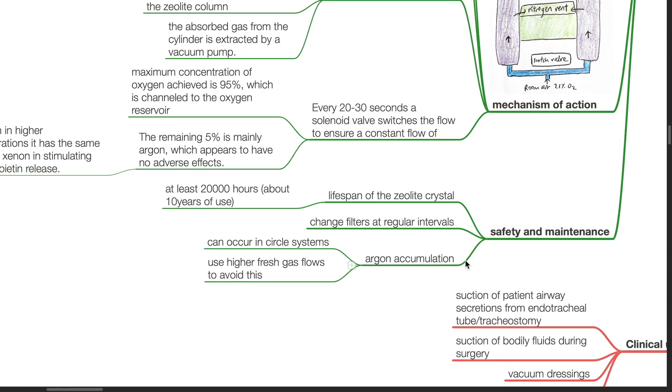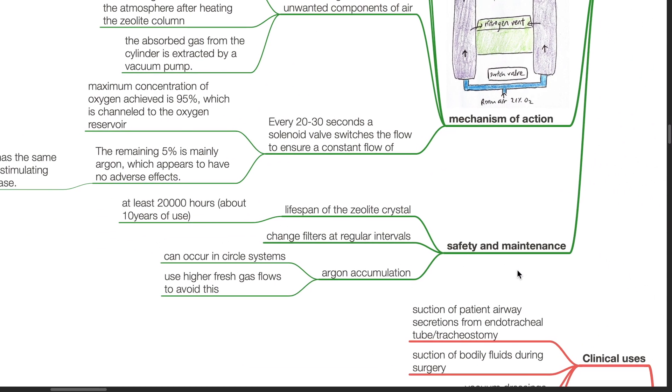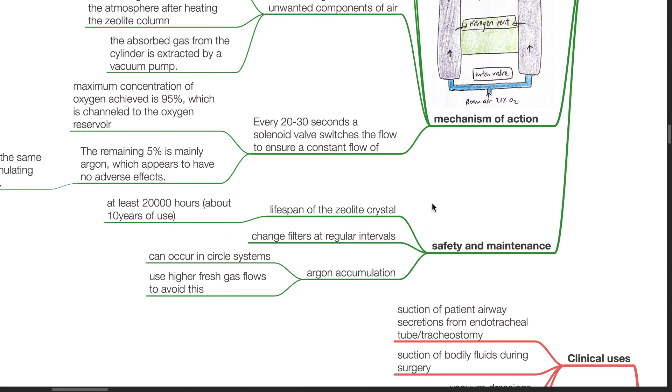Safety and maintenance: The lifespan of the zeolite crystal is at least 20,000 hours, about 10 years of use. Change the filters at regular intervals. Argon accumulation can occur in circle systems. Use higher fresh gas flows to avoid this.